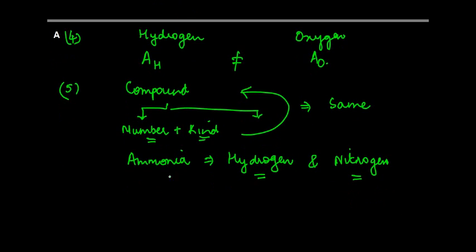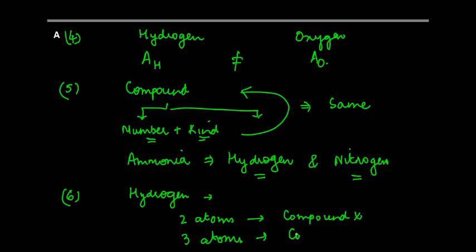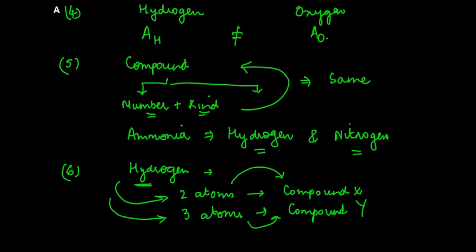And the last thing was that, it's not necessary—so let's say for example, if you have hydrogen, maybe you can use two atoms of hydrogen to form a particular compound, let's say compound X, and you can use three atoms of hydrogen to form a compound Y. So basically, what this means is that a different number of atoms of a particular thing may be used to form different compounds. So with two hydrogen atoms, you can form different compounds; with three, you can form different compounds.